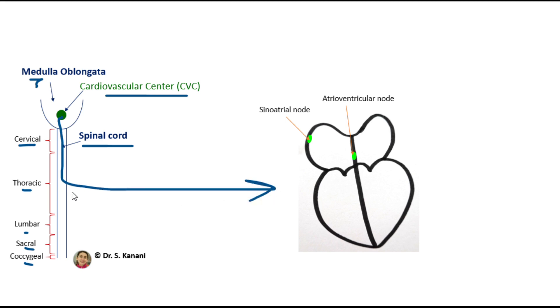It is important to notice that cardiac accelerator nerves exit through the thoracic section of the spinal cord.